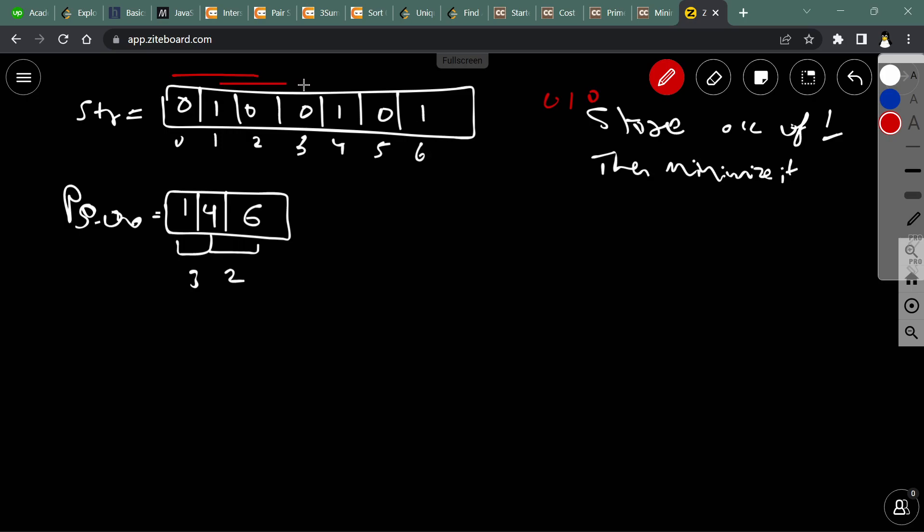If we choose this substring, then after reversing it, order remains the same: 0-1-0. If we choose this substring, after reversing it will become 0-1-0-0-1.